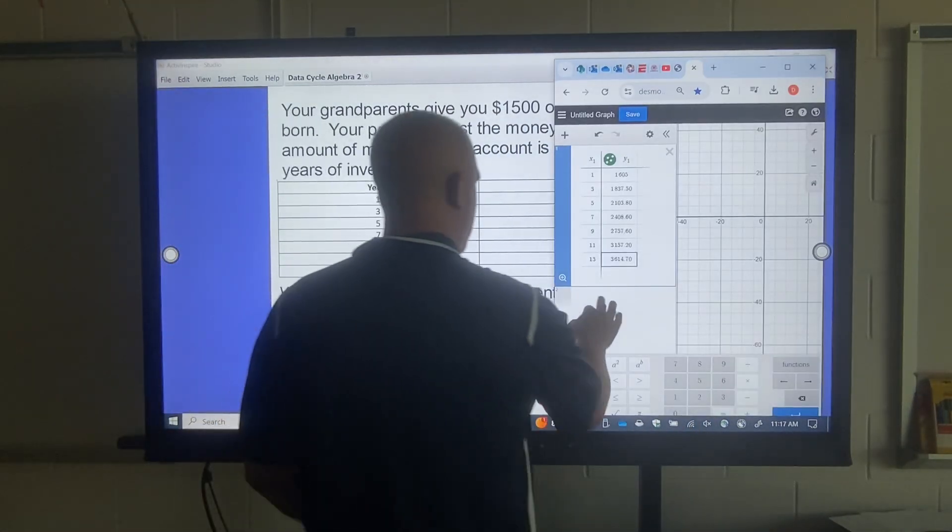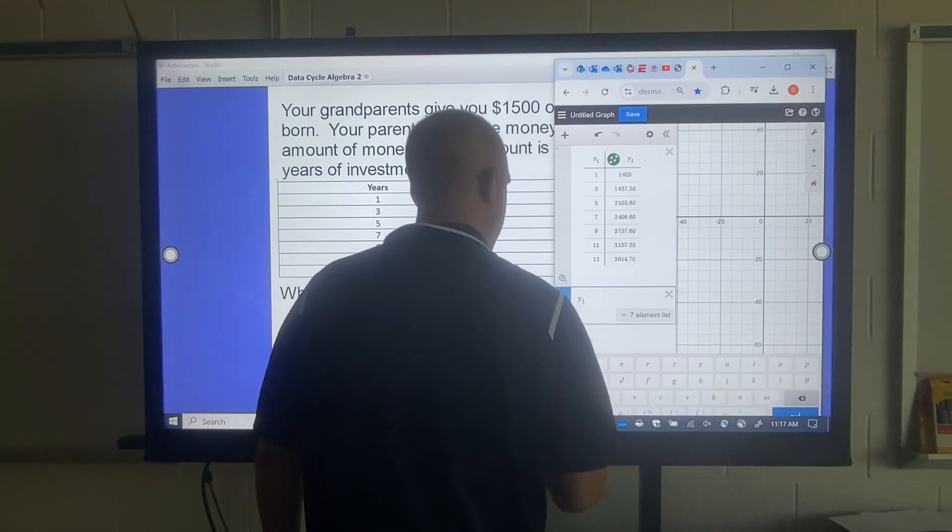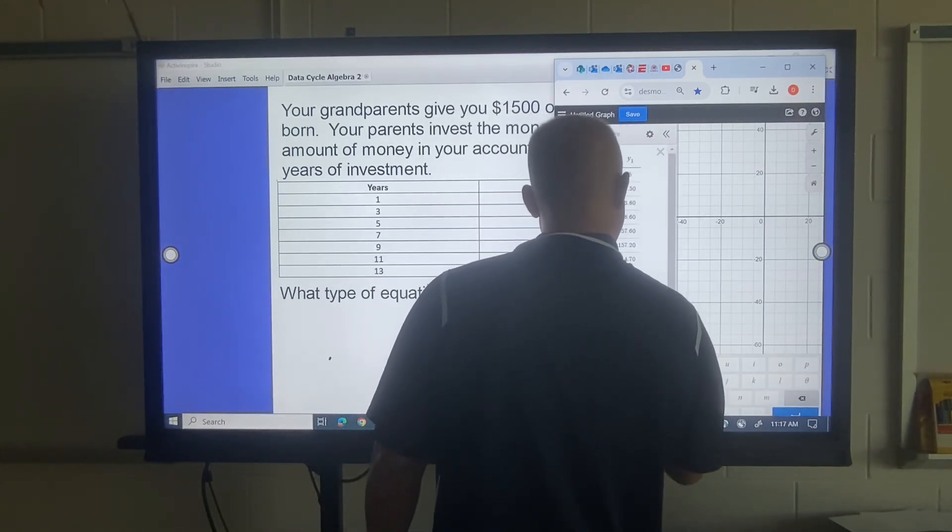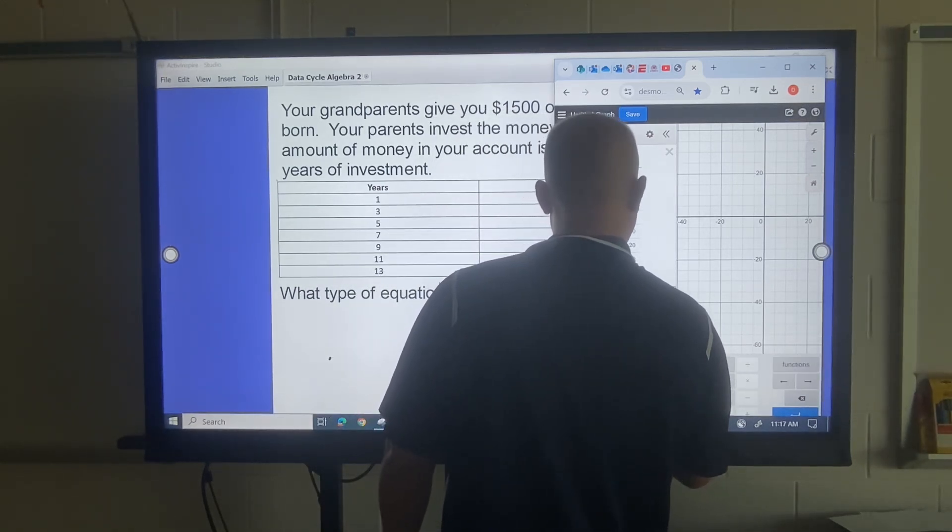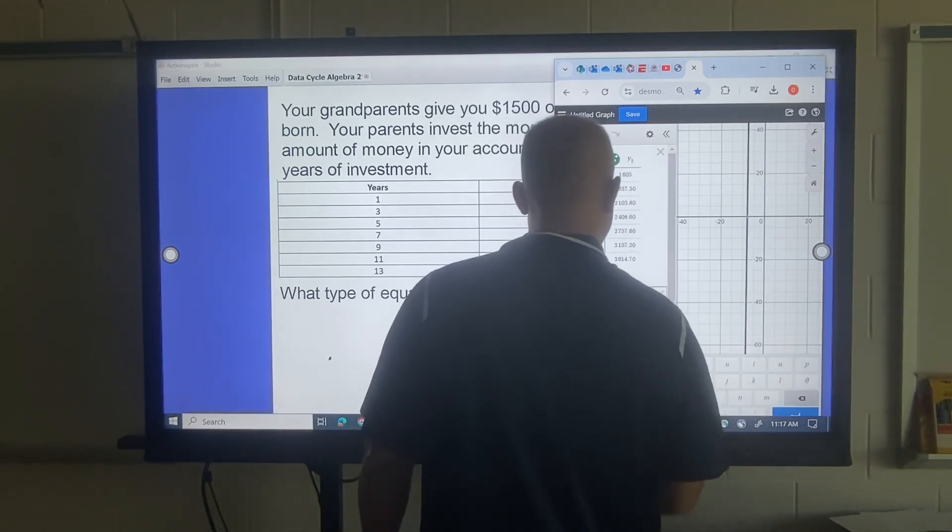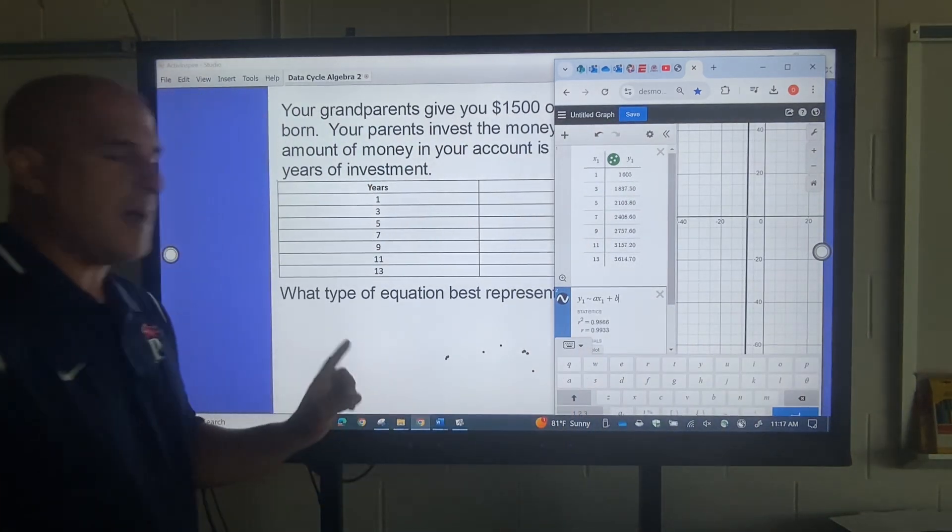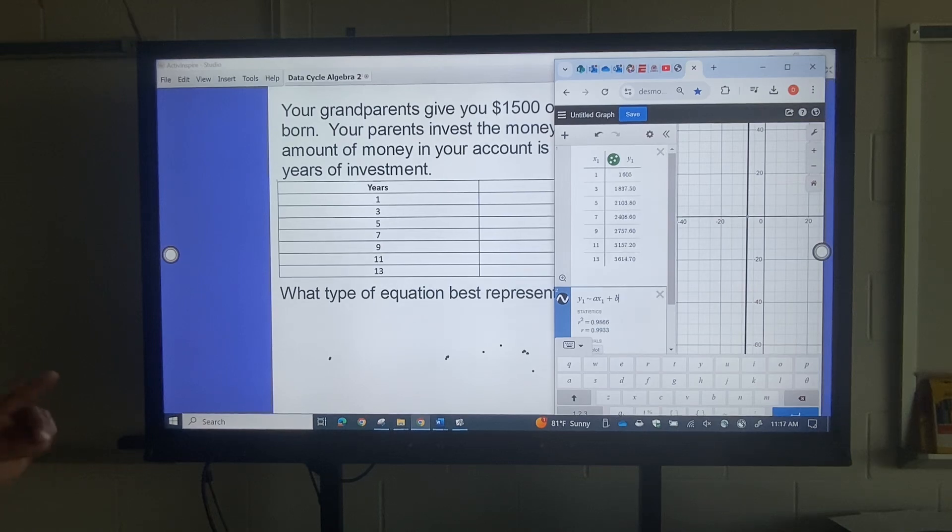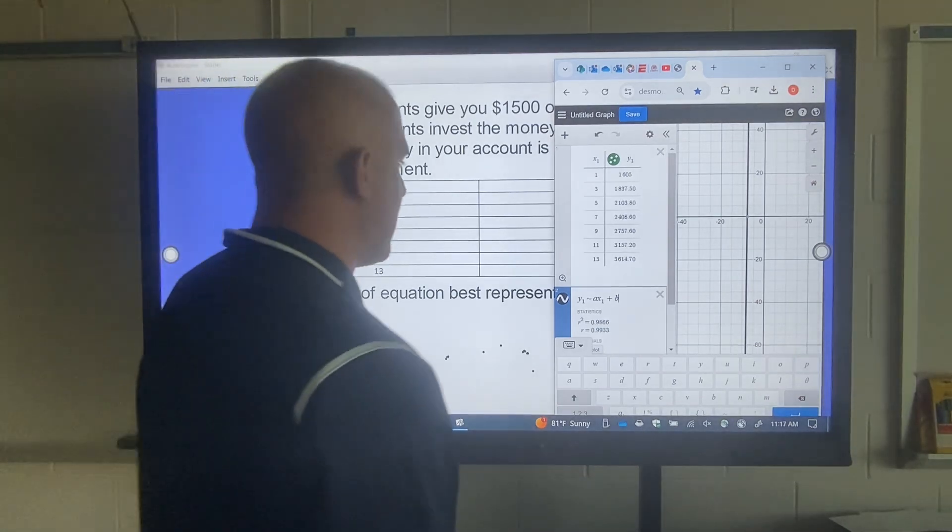Now, if I try the line one, Y1, curvy thing, AX1 plus B. The R squared's not bad. 0.9866. Not bad.